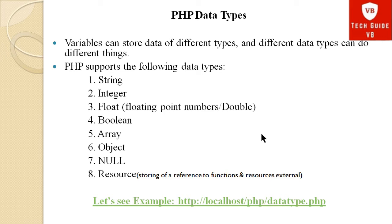The string data type is for storing characters. The integer data type is for storing whole numbers. The float data type is for floating point or double numbers. The fourth data type is boolean, which stores true or false values — that is, in general terms, 0 or 1.